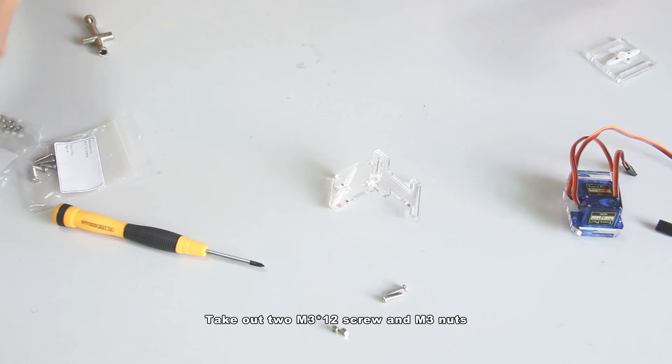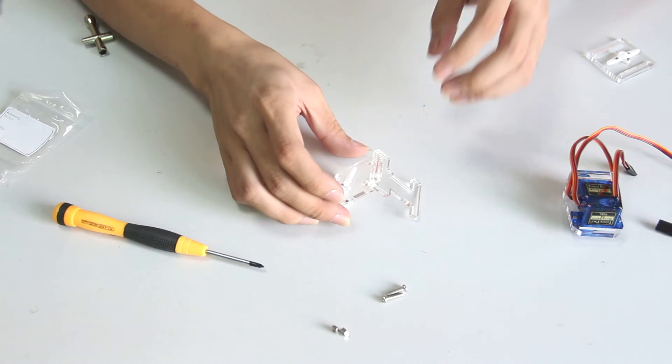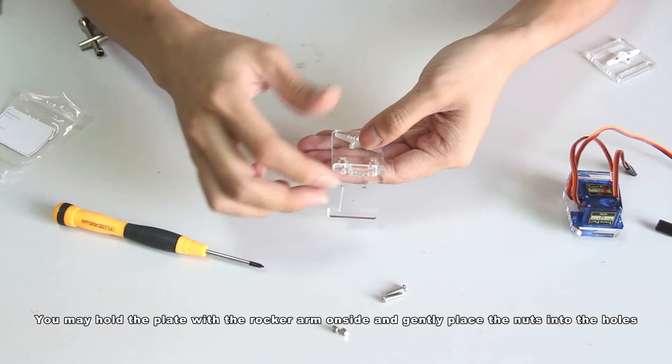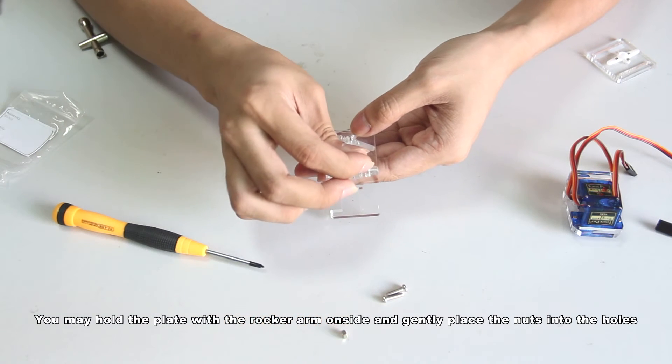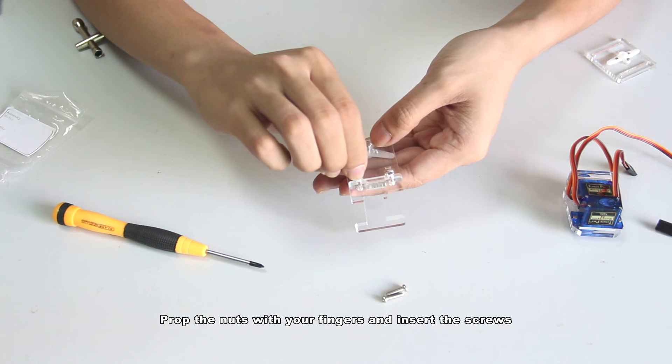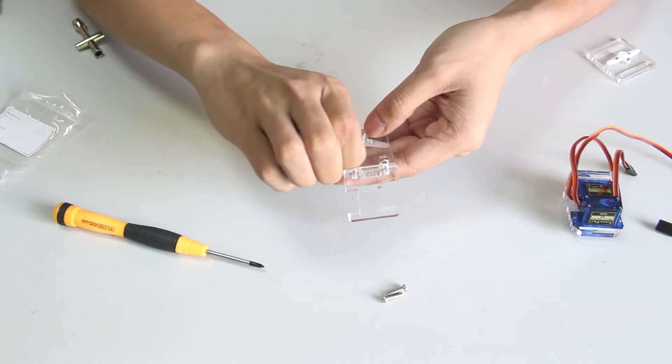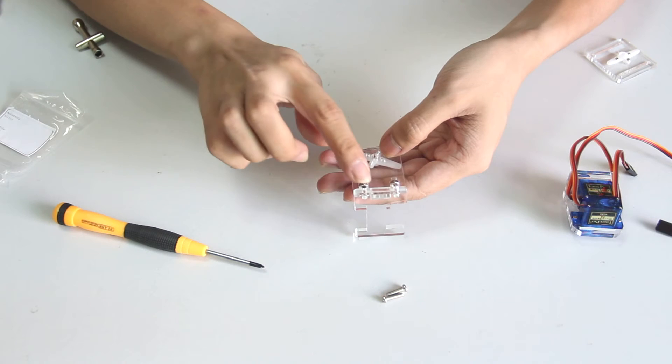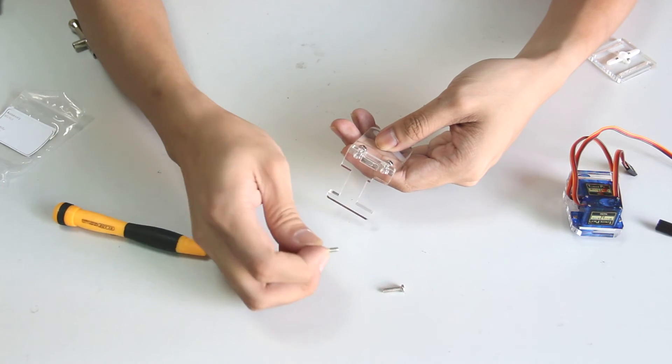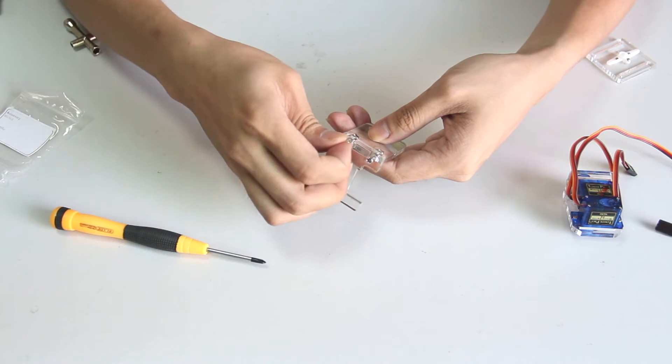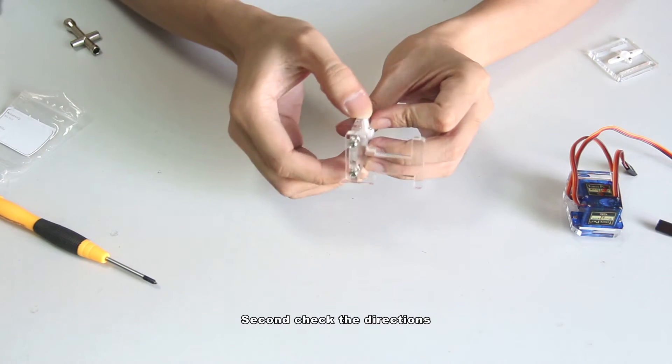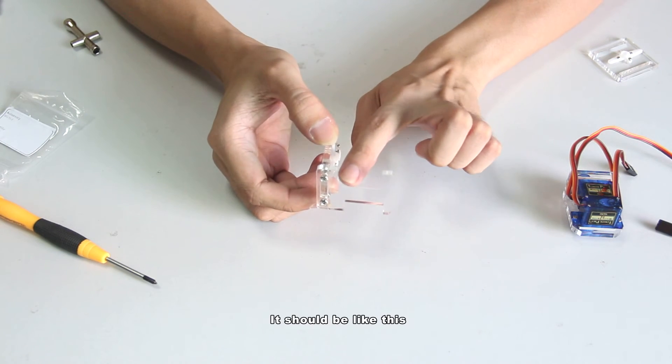Take out two M3x12 screws and M3 nuts. You may hold the plate with the rocker arm on side. Then gently place the nuts into the holes. Prop the nuts with your fingers and insert the screws. Tighten them with the screwdriver. Second check the directions. It should be like this.